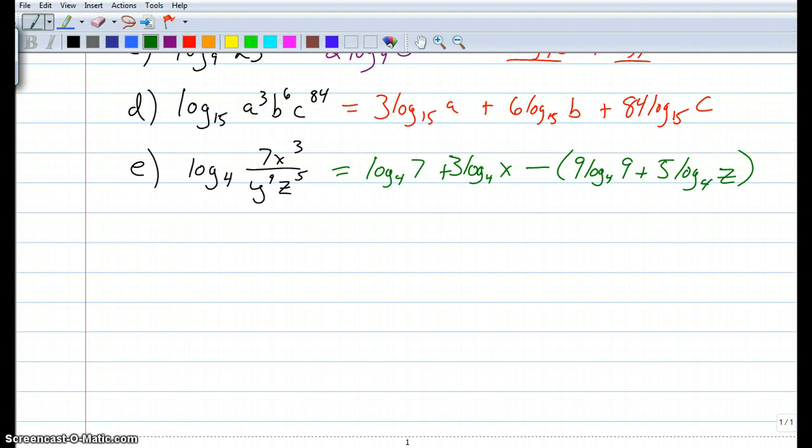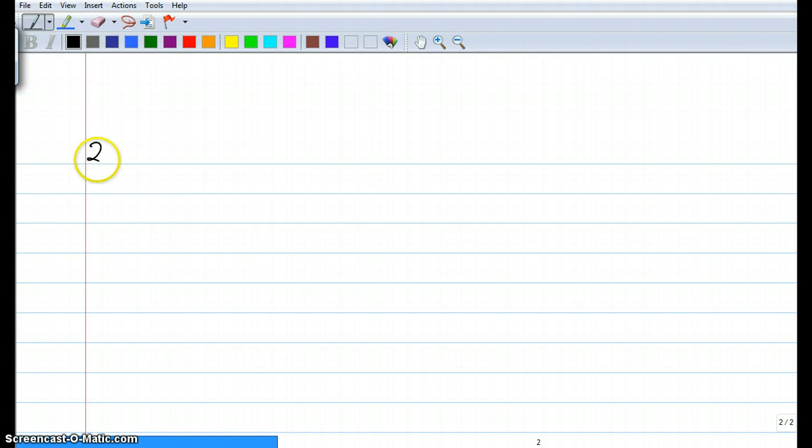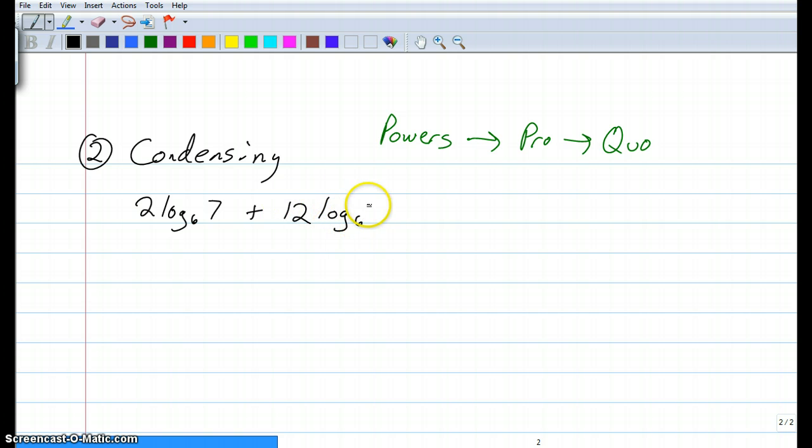Part 2 is going backwards. Now we're going to take these and we're going to condense. Now, this is actually day 2 notes. So if you want to focus on the first part, go ahead and press pause. Come back to it tomorrow. Otherwise, another day of notes. When you're condensing, what I would recommend to do is take care of your powers first, then you're going to take care of your products, and then you're going to take care of your quotient. So pow-pro-quo. Let's do an example here.